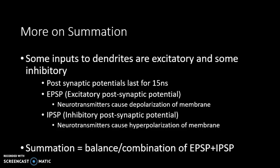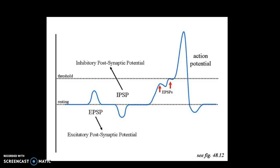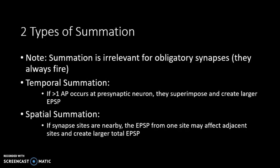Excitatory postsynaptic potentials, EPSPs, involve sodium coming in and potassium going out — similar to depolarization of a muscle cell. The summation is the balance of EPSPs and IPSPs combined. EPSPs must hit a certain threshold in order to stimulate an action potential at the postsynaptic neuron. If the sodium influx is not high enough, no action potential occurs.